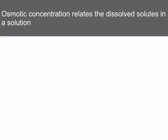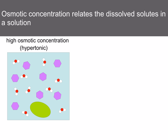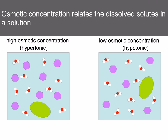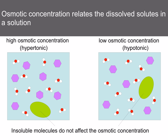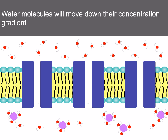Osmotic concentration relates to the number of dissolved solutes in a solution. In the diagram, the hypertonic solution has lots of pink molecules; the hypotonic solution has fewer. There are also green particles — these are insoluble molecules and they don't affect osmotic concentration. Only soluble molecules affect the osmotic concentration. Water molecules move down their concentration gradient through special channel proteins in the partially permeable membrane, which transport water but not glucose.